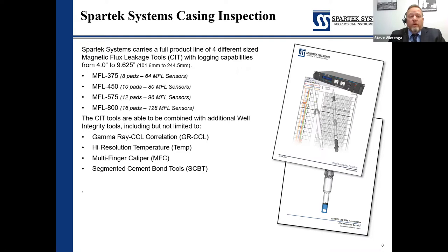While running these tools, quite often we'll run them with other combined sensor arrays. Gamma ray is typical for correlation purposes. High-resolution temperature is available in the tool, or we can run additional sensors to capture that. The multi-arm or multi-finger calipers discussed in our last session, and the segmented bond tools, all make up part of that integrity package.